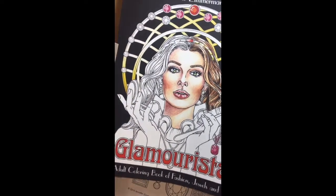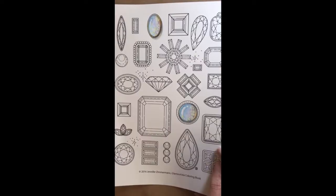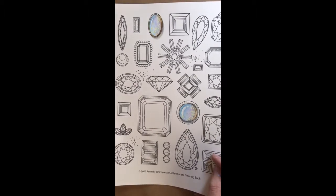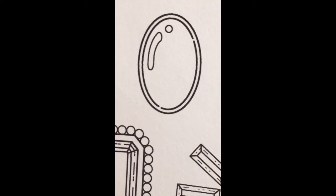Today we're using a page out of my Glamourista book. It's my gem page. And here you can see I've created opals in a couple different shapes already.